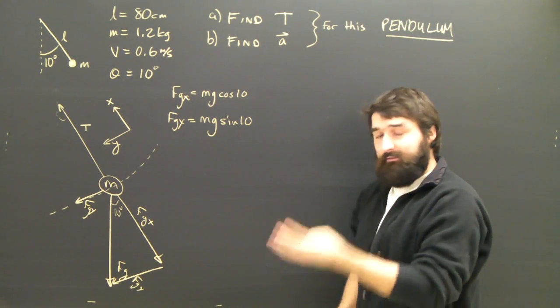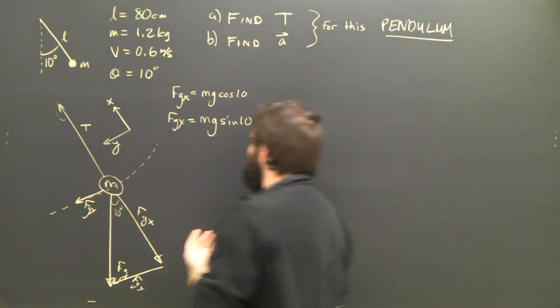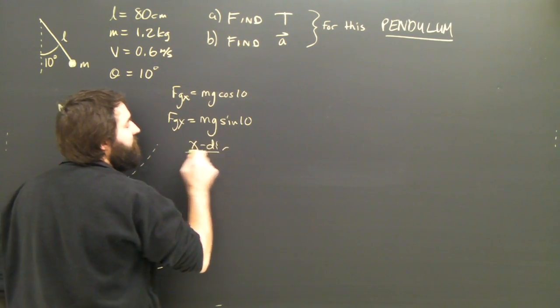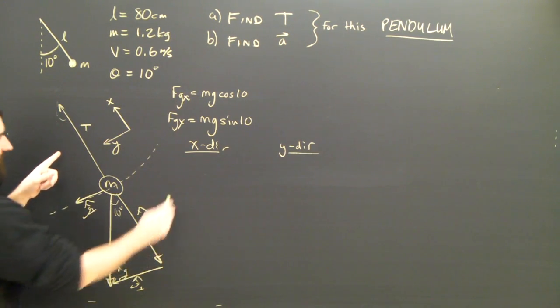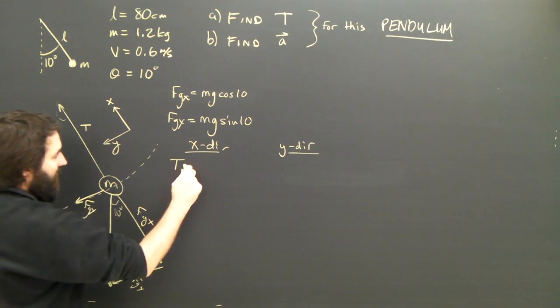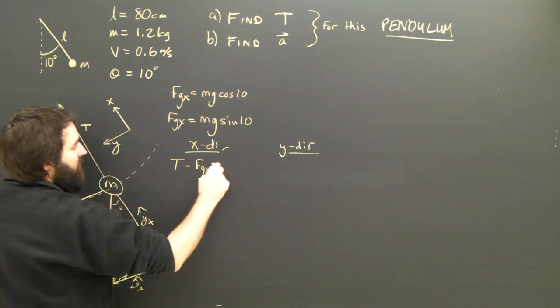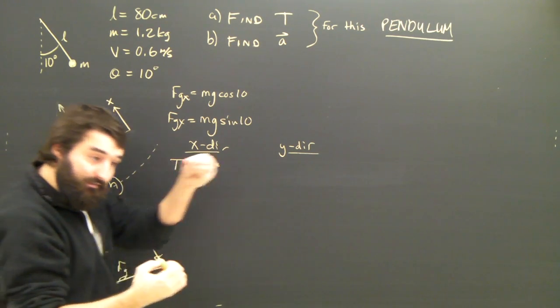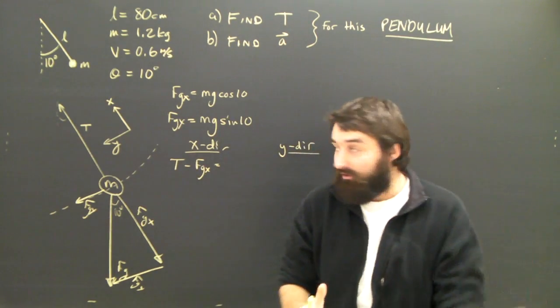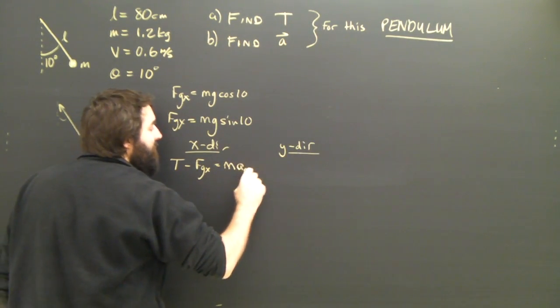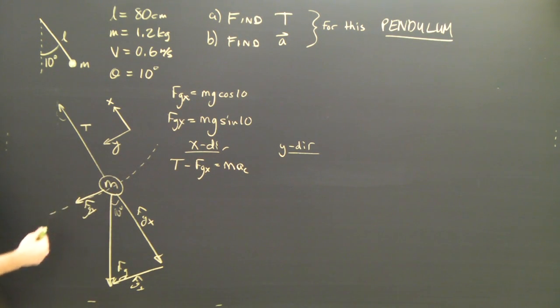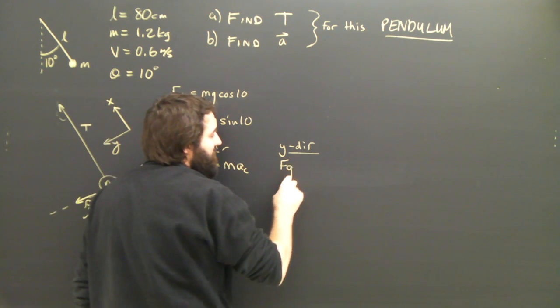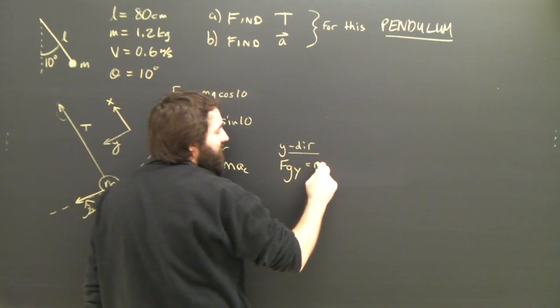Step four. Put our Newton's laws in the x direction and the y direction. In the x direction, we have tension is positive. Fgx is negative. And since it is turning, it is going in a part of a circle. It's curving, so there will be a centripetal acceleration. So that equals m, a, c. In the y direction, it's speeding up or it might be slowing down, because Fgy is unbalanced. So in the y direction, Fgy equals m, a.